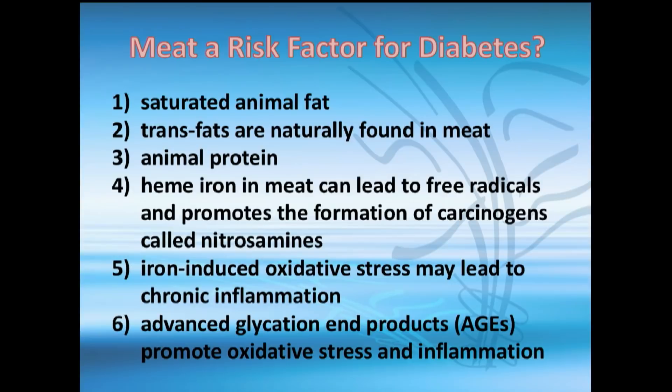Meat also contains heme, and iron is an oxidative agent. As I mentioned, inflammation and oxidation are the problem. That contributes to chronic inflammation.